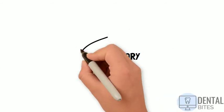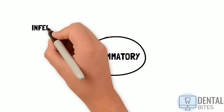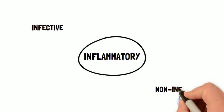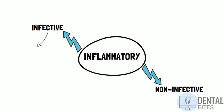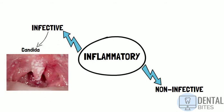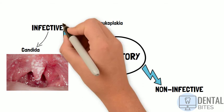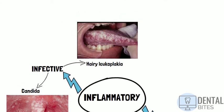Let's start with the most common group you'll see in the mouth, which are the inflammatory type. These can be further broken down into infective or non-infective types. For example, candida can give white lesions, as can hairy leukoplakia which is caused by the Epstein-Barr virus, also known as human herpes virus 4. This tends to occur on the lateral border of the tongue.